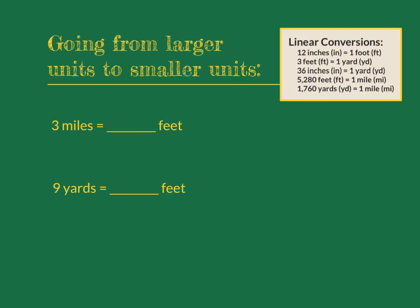We will start by converting from a larger unit to a smaller unit. In this first problem, we are going from miles to feet. We can see in our conversion chart that there are 5,280 feet in one mile. If I know that there are 5,280 feet in each mile and I have three miles, I can find out how many feet I have total by multiplying those. And if I multiply 5,280 by three, I will get my answer of 15,840.